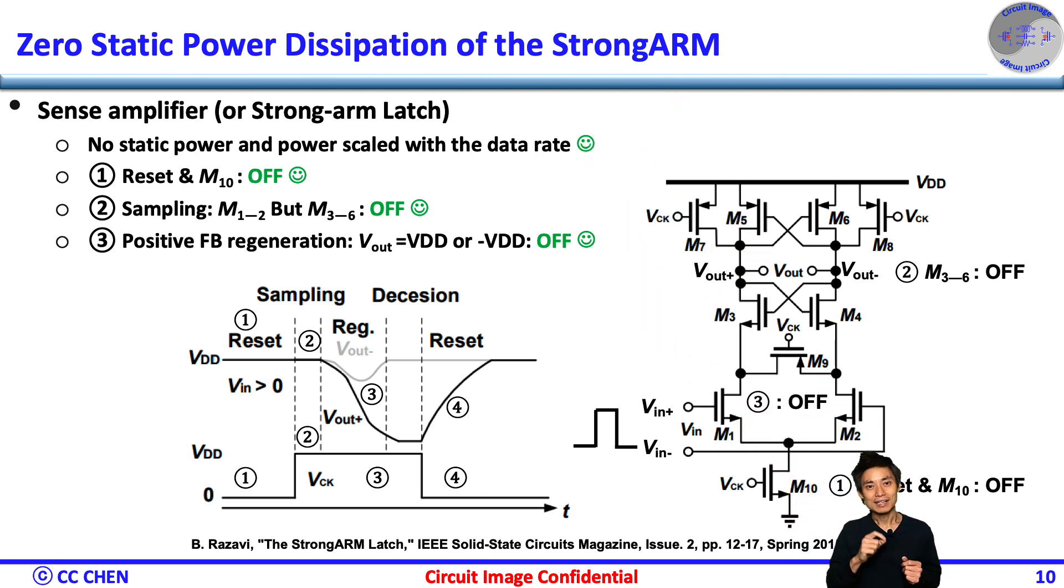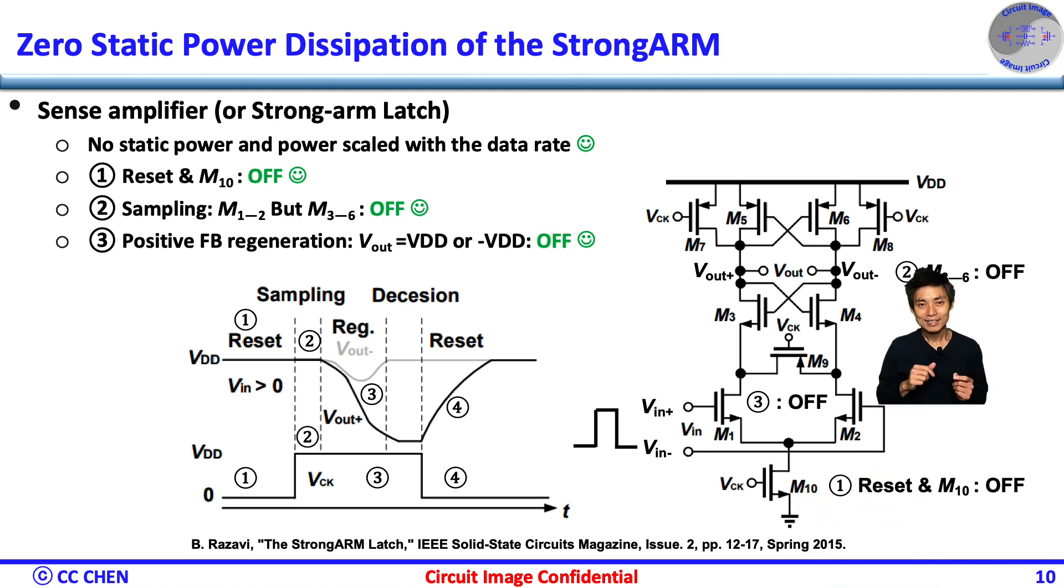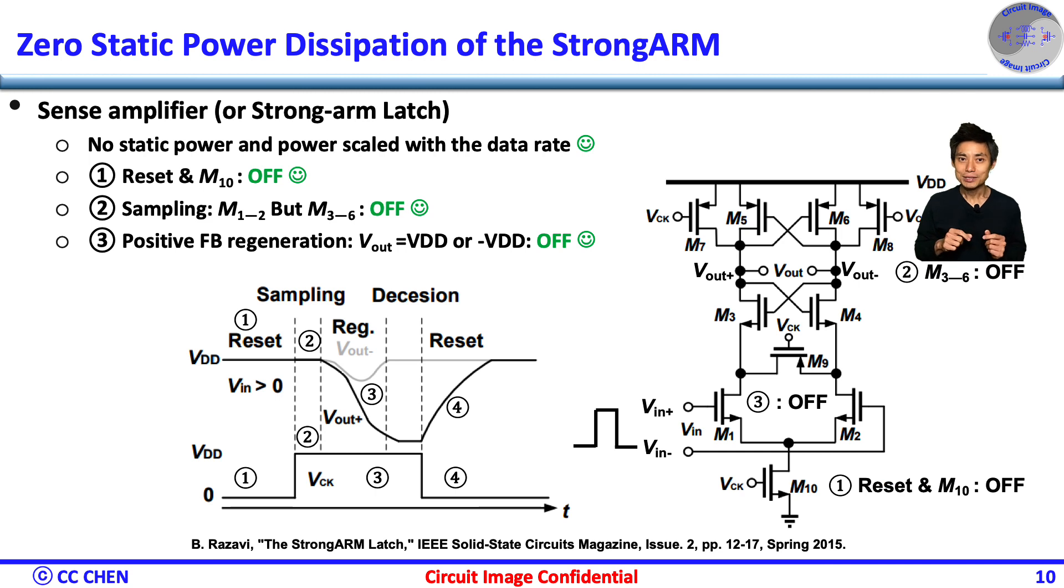First, starting at the reset phase, the clock is low and the tail switch is open to break the current path to the ground. Second, during the input sensing phase, all the drains of the PMOS M5-M6-M7-M8 are still turned off to break the current path to VDD.